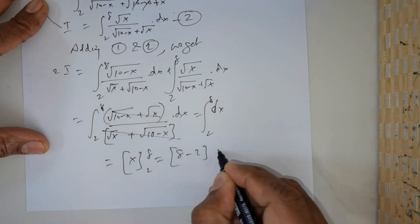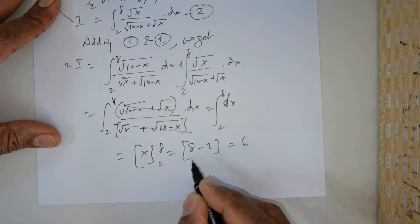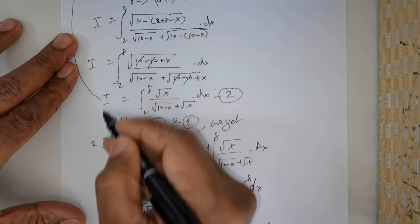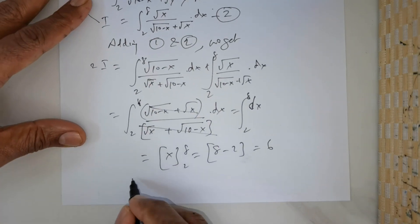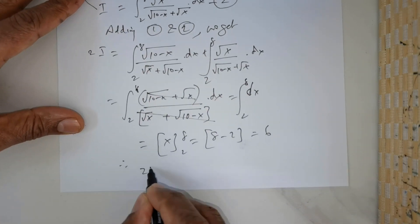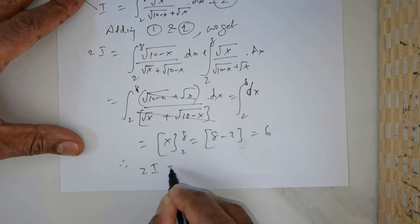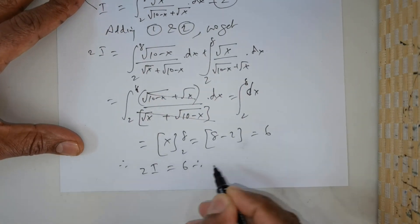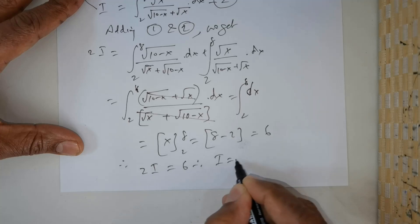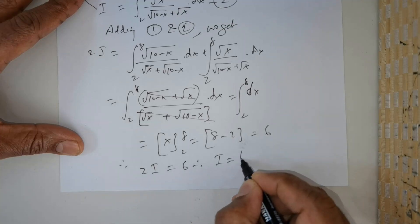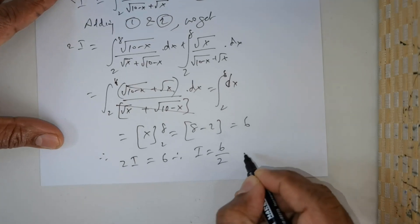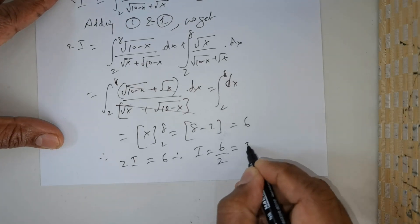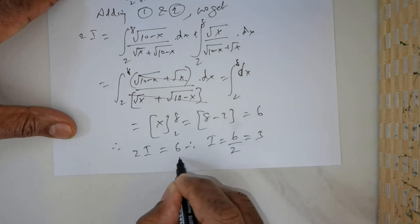Upper limit minus lower limit gives us 8 - 2 = 6. On the left-hand side we have 2I. Therefore, 2I = 6, and therefore I = 6 ÷ 2 = 3.